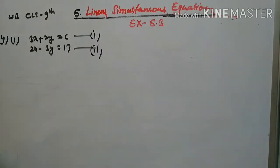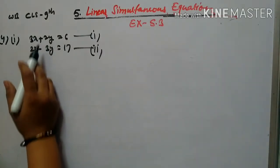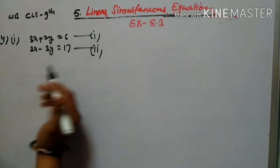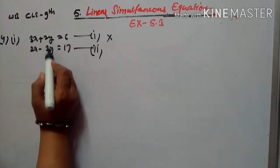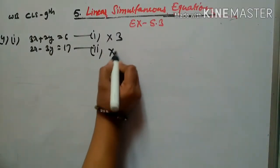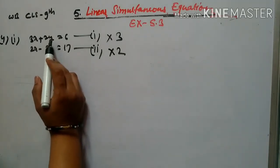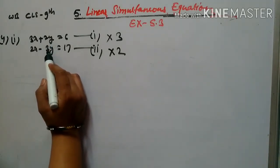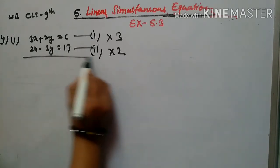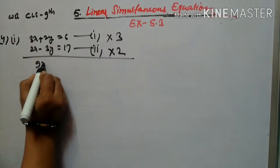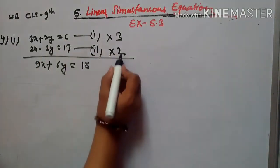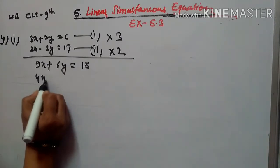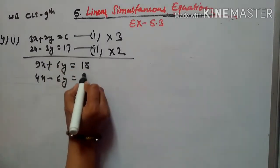To eliminate a variable, we are going to multiply. We will multiply the first equation by 3 and the second equation by 2 to make the y-coefficients equal. So 3 times equation 1 gives 9x + 6y = 18, and 2 times equation 2 gives 4x - 6y = 34.